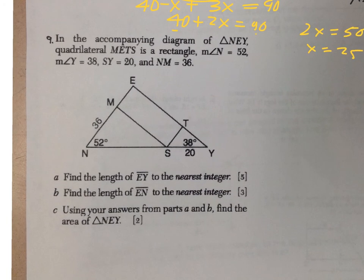Alright, question number 9 gets a little bit more advanced as we go. Finding the length of EY to the nearest integer. They're giving me a lot of information at the top and one fact not to miss out on is that rectangle METS or shape METS is a rectangle.